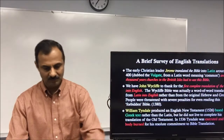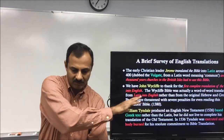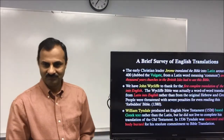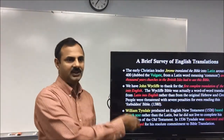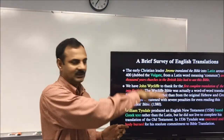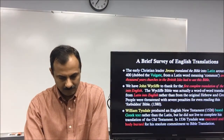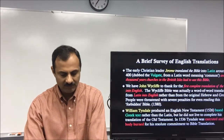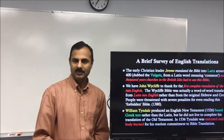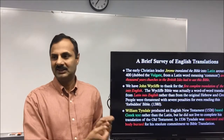In 1526, William Tyndale produced an English New Testament based on the Greek text — bypassing the Latin translations, going directly to the original Greek and translating into English. From 400 AD to 1526, the authoritative Bible was the Latin Vulgate. But Tyndale did not live to complete the translation of the Old Testament. In 1536, Tyndale was executed and his body burned for his resolute commitment to Bible translation. These men gave their lives just to give us an English Bible.